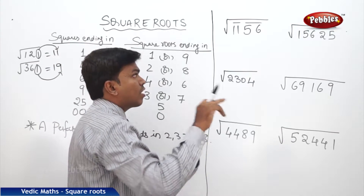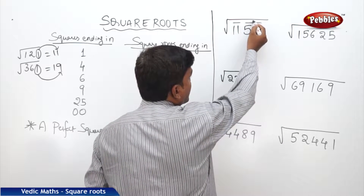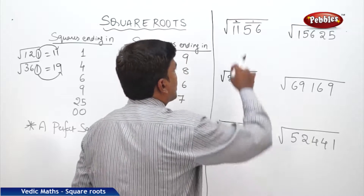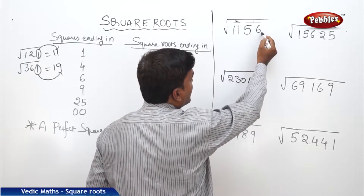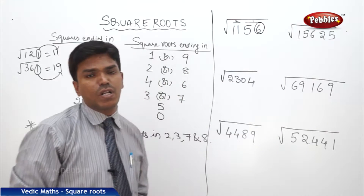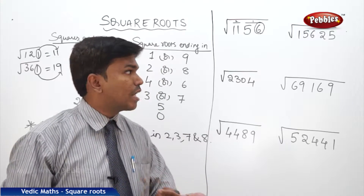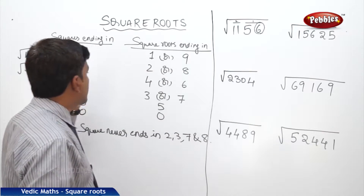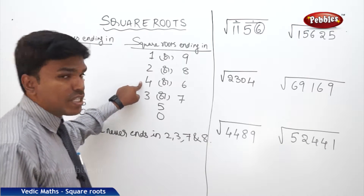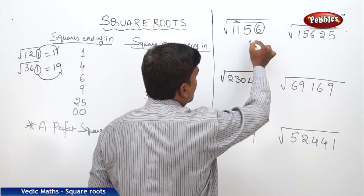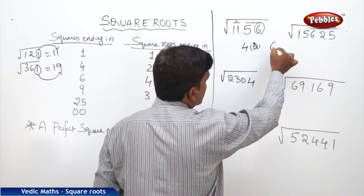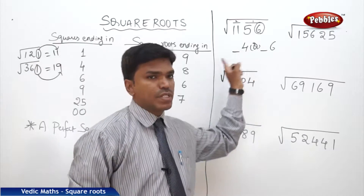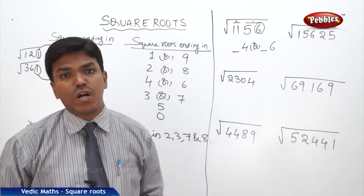Second step: after partitioning the number from the right side, this is the first partition and this is the second partition. Now look at the end digit of the given square number. The square number here is ending in 6. If a square number is ending in 6, its square root should end in either 4 or 6. So my answer should end in either 4 or 6, with one blank left on the left side.